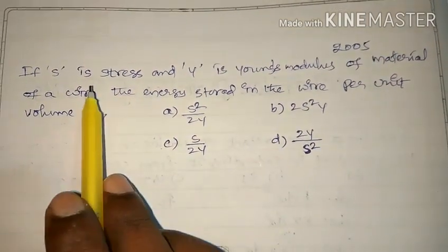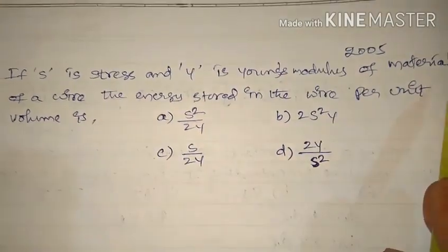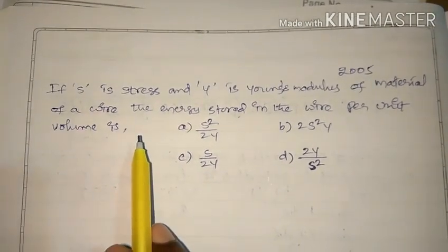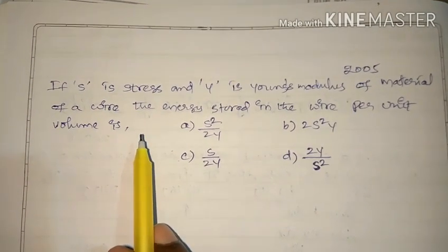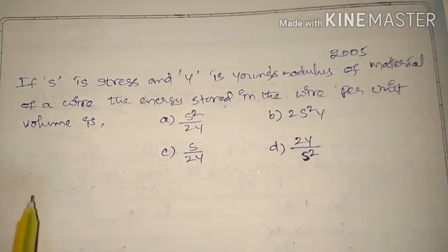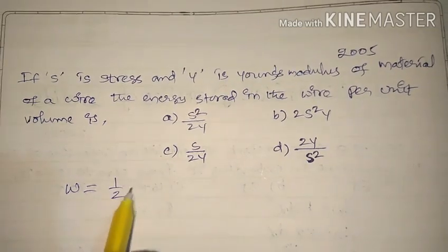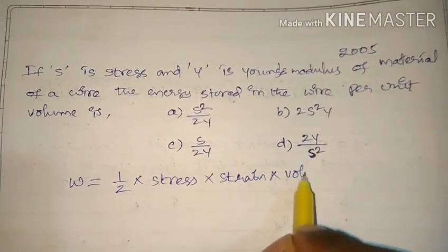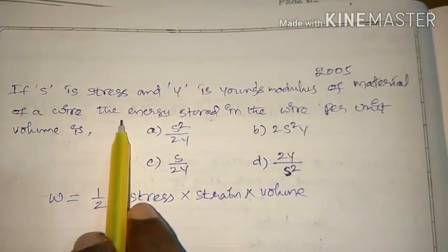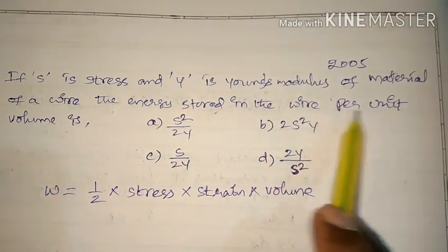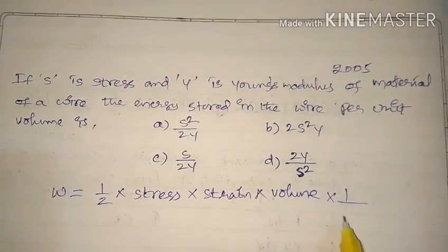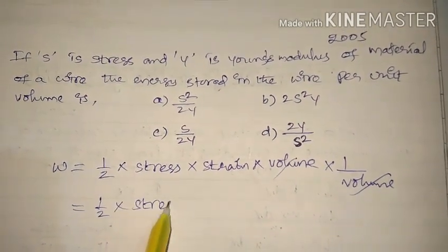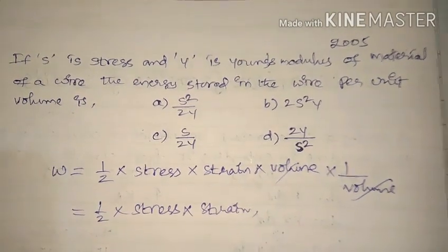The question asked in 2005: if S is the stress and Y is the Young's modulus of the material of a wire, the energy stored in the wire per unit volume is — we already know the potential energy W = (1/2) × stress × strain × volume. Dividing by volume, the volume terms cancel, leaving (1/2) × stress × strain.